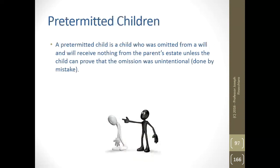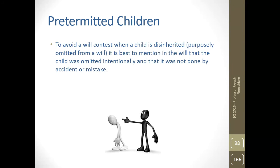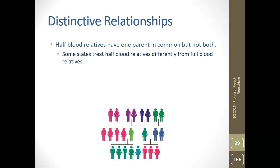A pretermitted child is one who is omitted from a will and will receive nothing from the parent's estate unless the child can prove the omission was unintentional — done by mistake. To avoid a will contest when a child is disinherited or purposely omitted, it is best to mention in the will that the child was omitted intentionally and not by accident or mistake. The more common feature is simply to leave them a dollar. Half-blood relatives have one parent in common but not both, and some states treat half-blood relatives differently from full-blood relatives.